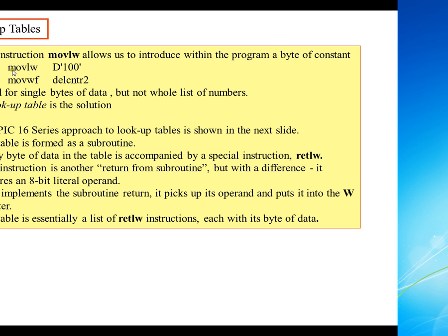One of the commands we learned previously was movlw and that's good for making constant variables, constant data. But what if we have a long string of numbers that we want to store? It would be better to have a different command, something that's a little bit simpler to use. This takes up two commands for every byte of data, so the lookup table is the solution to this.